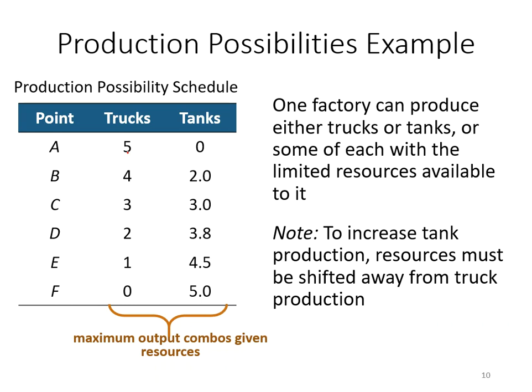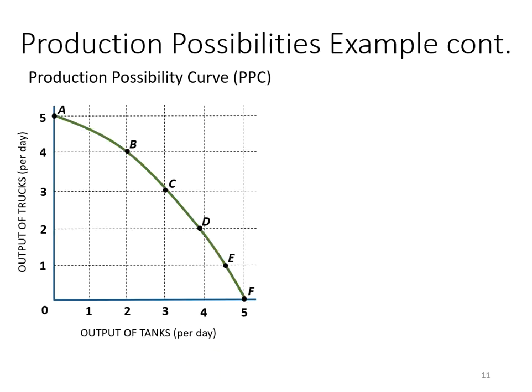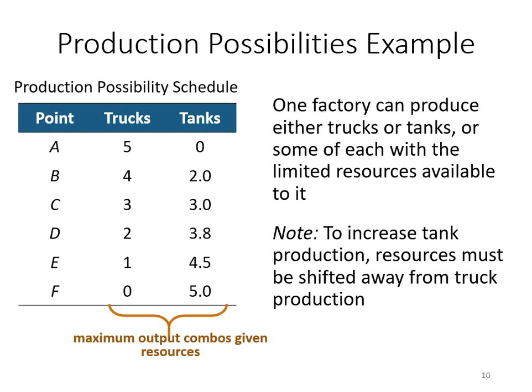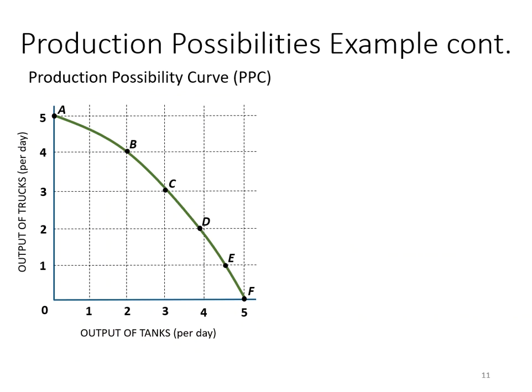There is a very similar concept called the production possibility curve. It shows exactly the same information, but the expression is different because it will be a curve instead of a table. Let's convert our table to a curve — pay attention to this chart.